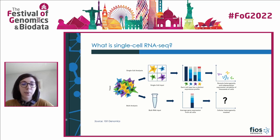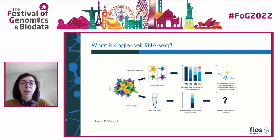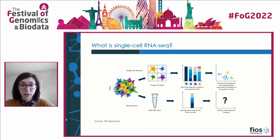Unlike bulk RNA sequencing where we would have an average expression of genes across all cells in our sample, this allows us to extract information on the heterogeneity of cell populations that comprise a sample, find gene expression signatures or biomarkers, see how cell types interact with each other, how their state changes in different conditions, or how they transition from one state to another.